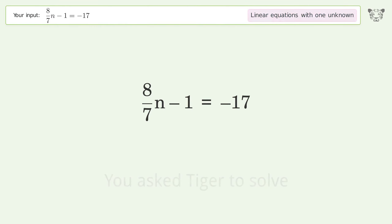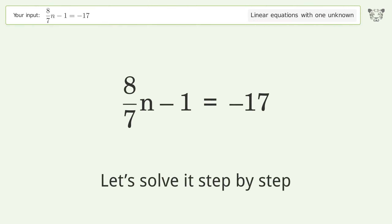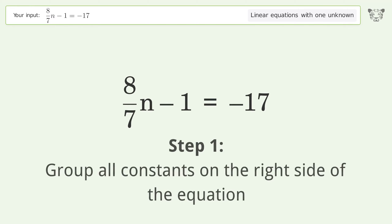You ask Tiger to solve this — it deals with linear equations with one unknown. The final result is n equals negative 14.